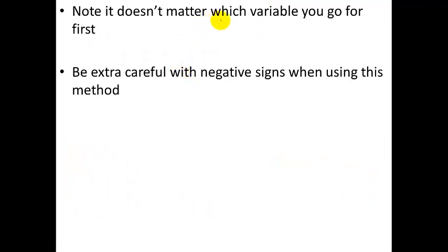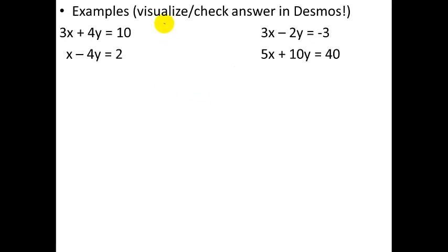All right. Note two things. It doesn't matter which variable you go for first. It could be x or y. You can cancel out whichever one seems easier. And be extra careful with negative signs. If you're subtracting the two equations, you've got to make sure that you subtract everything properly. All right. Here we go. A couple of examples. And then we'll check in Desmos to see what they look like. In this first example, I look at my coefficients here. 3 and a 1. They do not match up. Then I look here. 4 and negative 4. Those match up. So, these two equations, I want to add together. I'm going to take this left side and this left side and add them together. So, 3x plus 1x is 4x. These cancel out. I got equals. 10 plus 2 is 12.